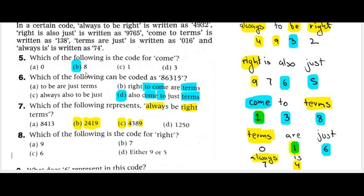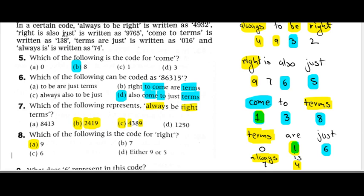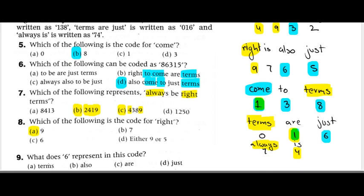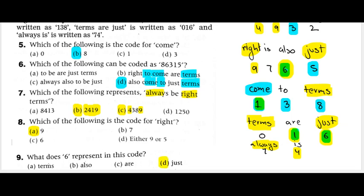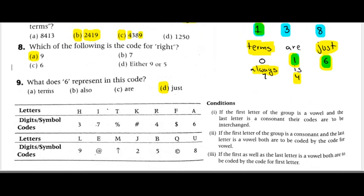What of the following is the code for 'right'? We just discussed it — the code for right is 9. A is nine — A is correct. Now question number eight: what does six represent? Six is here and six is here. Find what is common in both. Six would represent 'just' — so D is the correct one.